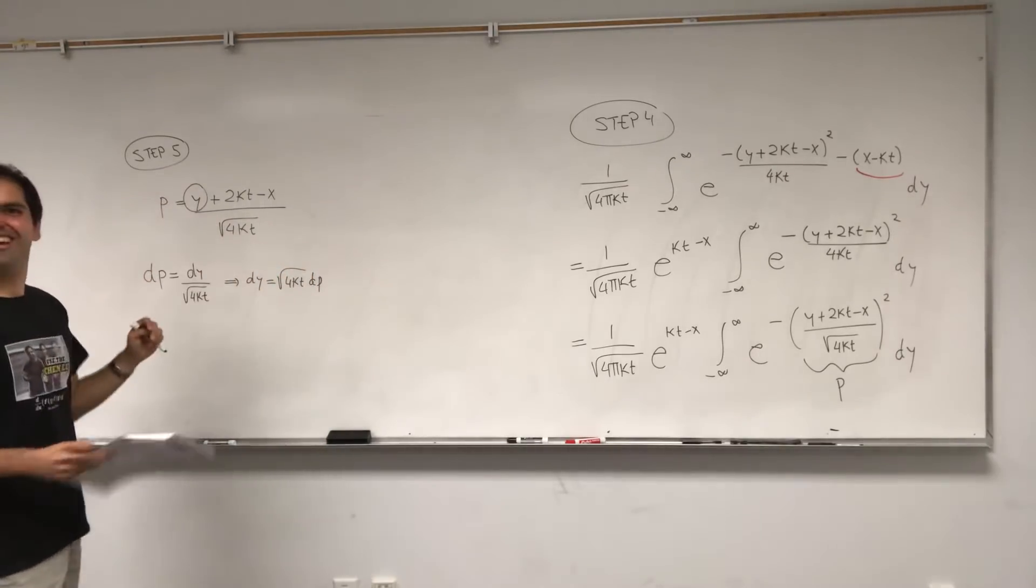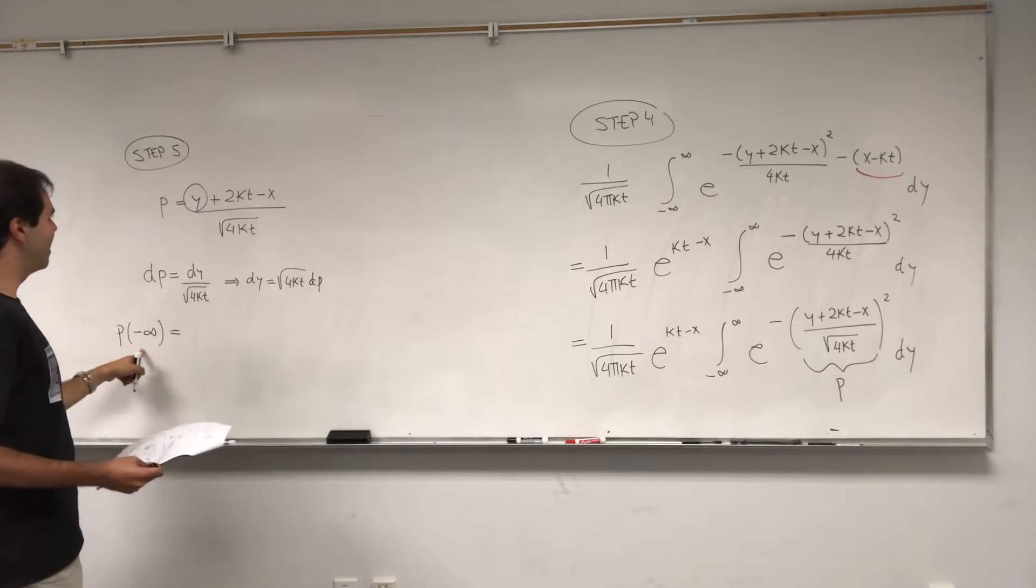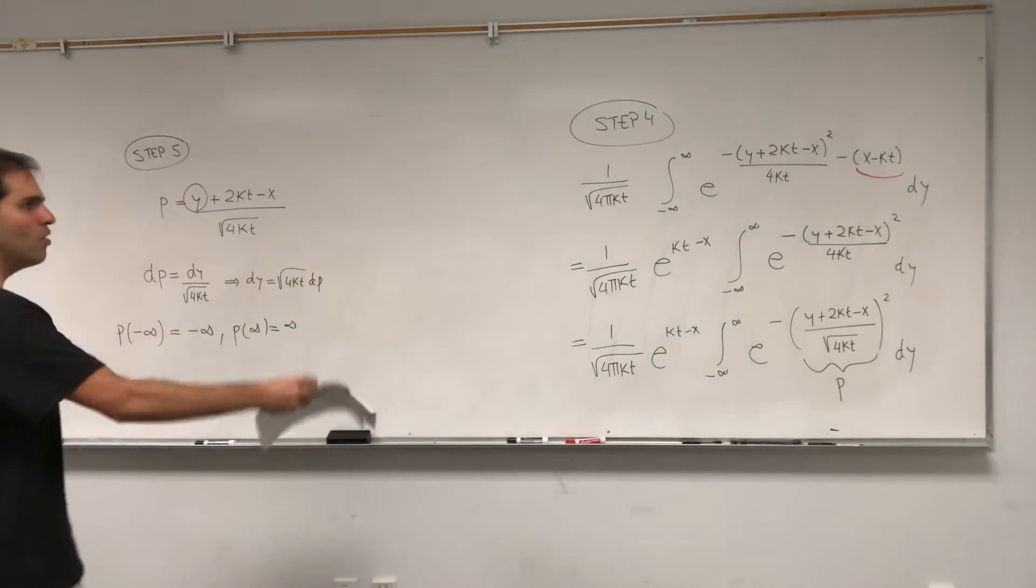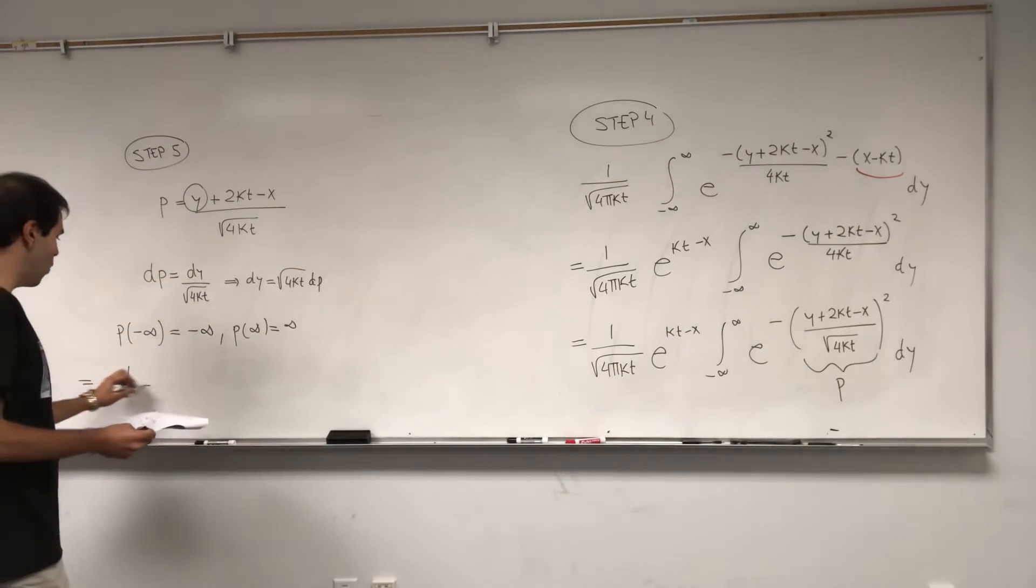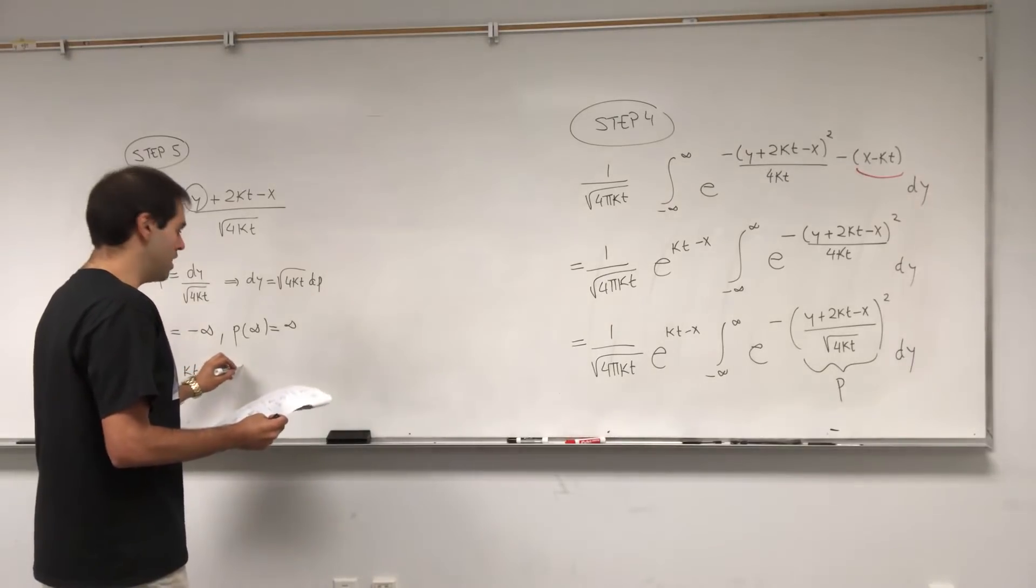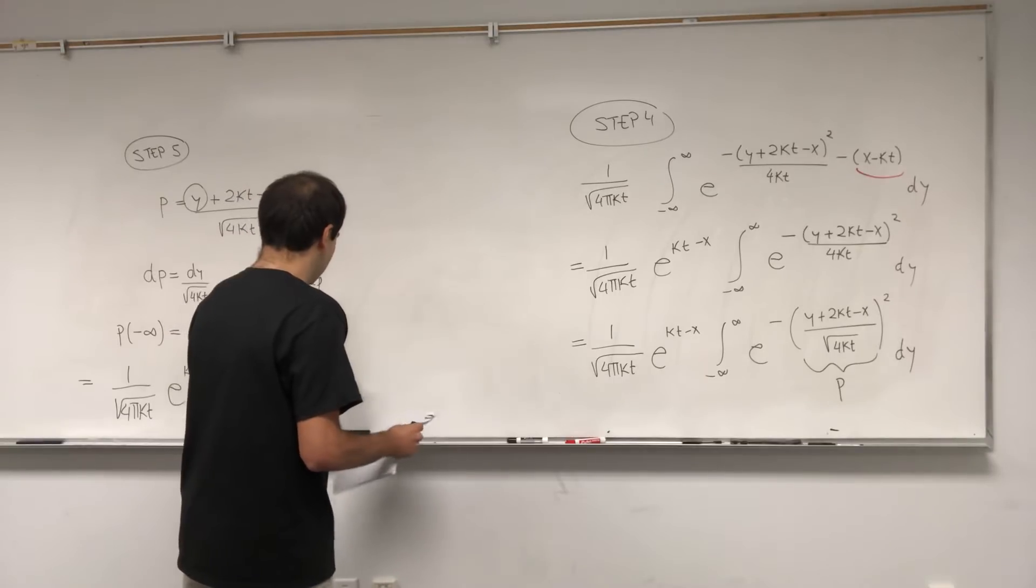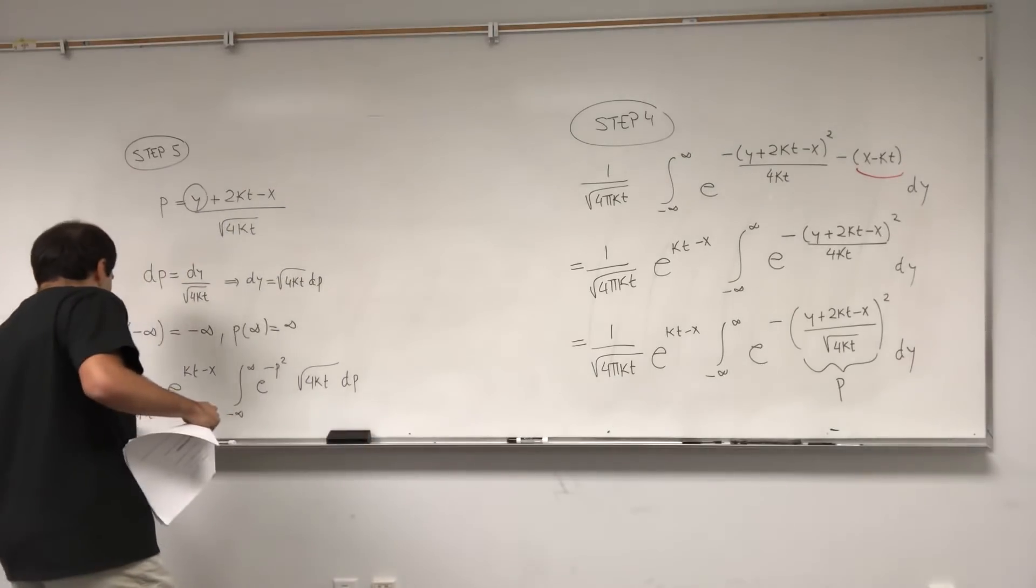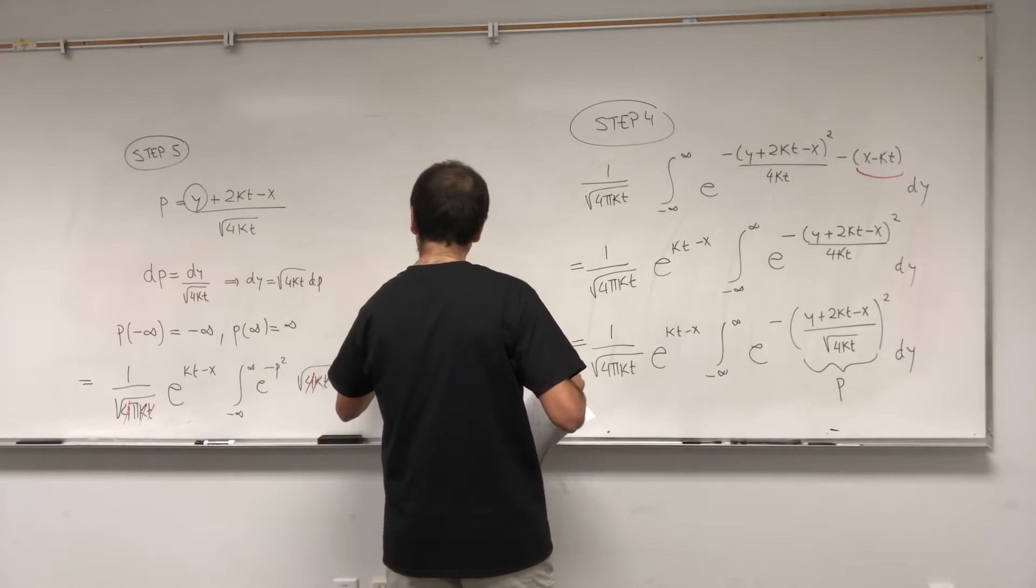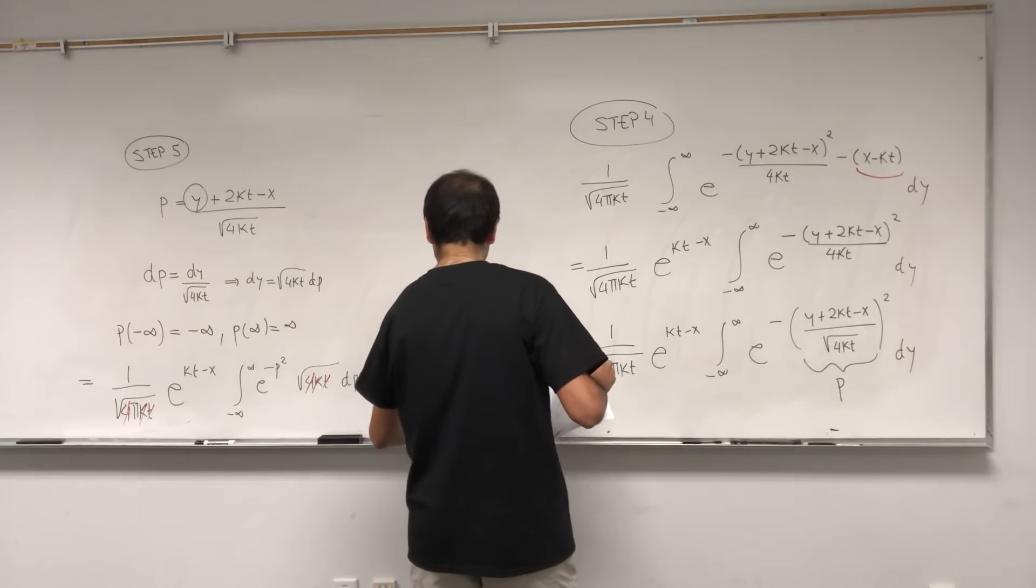And again, what is, it looks like pi M, I didn't even realize. Forgive me, it's like Sunday night so I'm a bit boozy. So p of minus infinity becomes minus infinity, p of plus infinity becomes infinity. So this whole junk just becomes 1 over square root of 4 pi kt, e to the kt minus x, integral from minus infinity to infinity, e of minus p squared square root of 4kt dp. And look what's nice, those 4kt's actually cancel out.